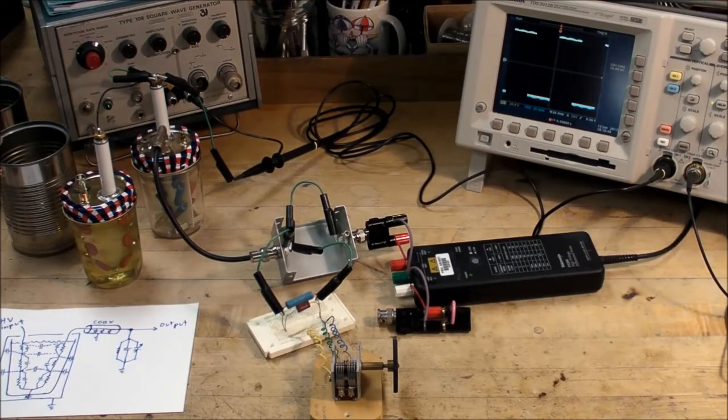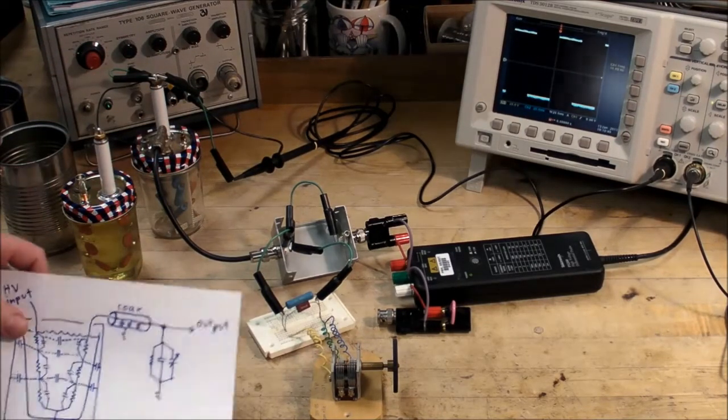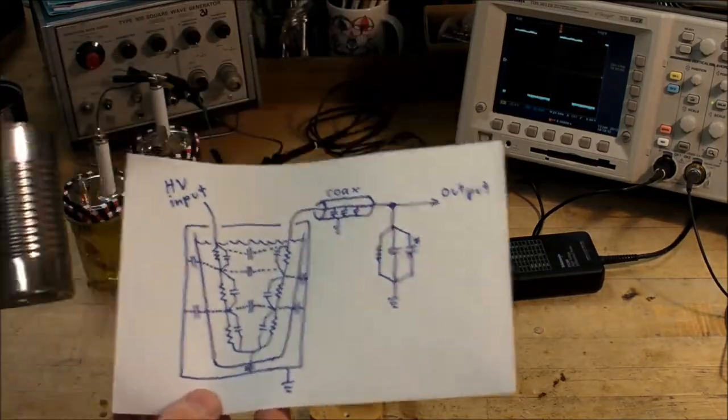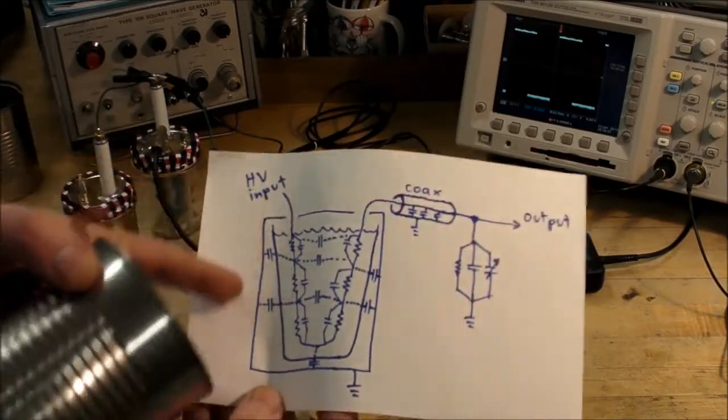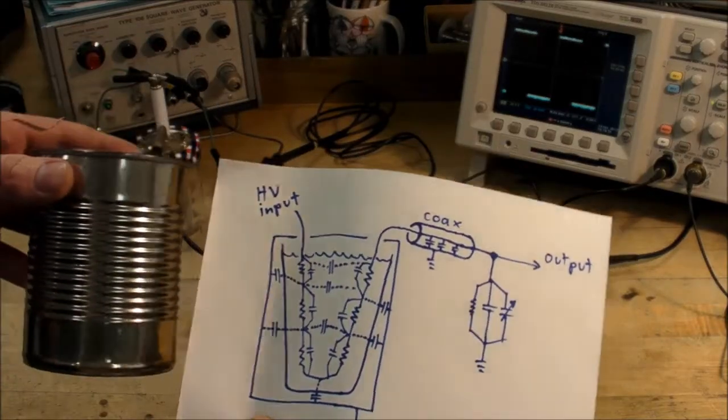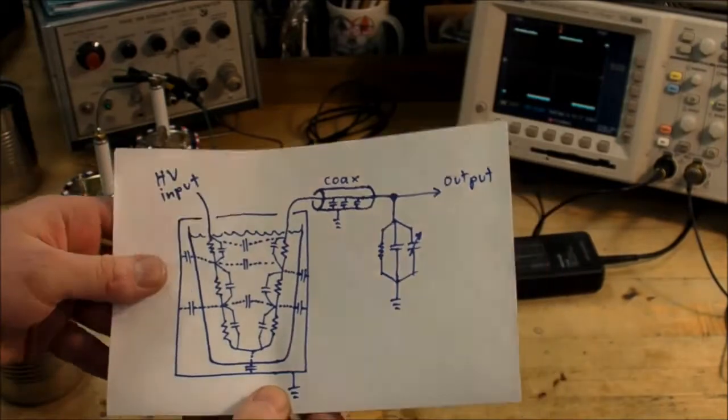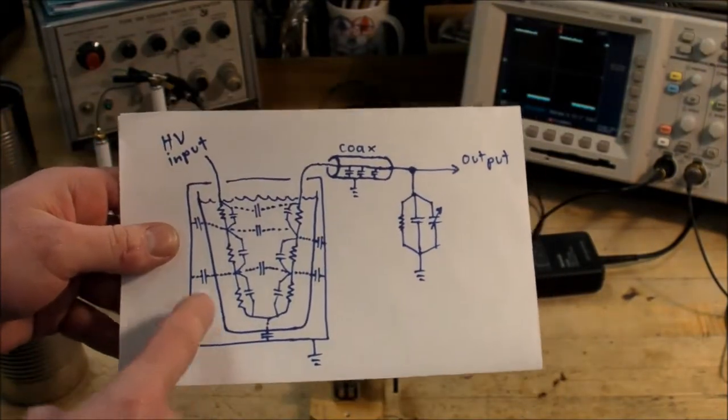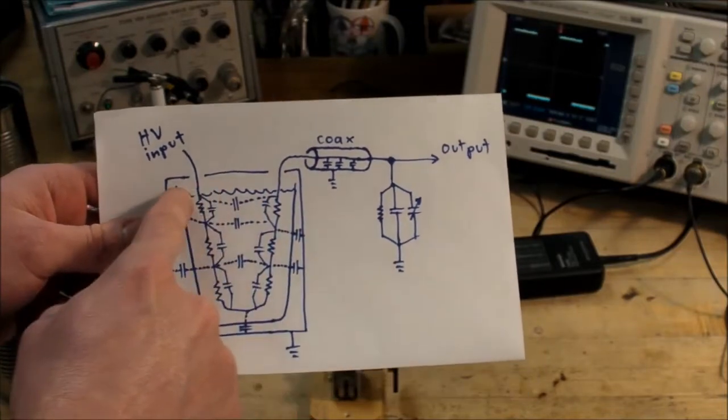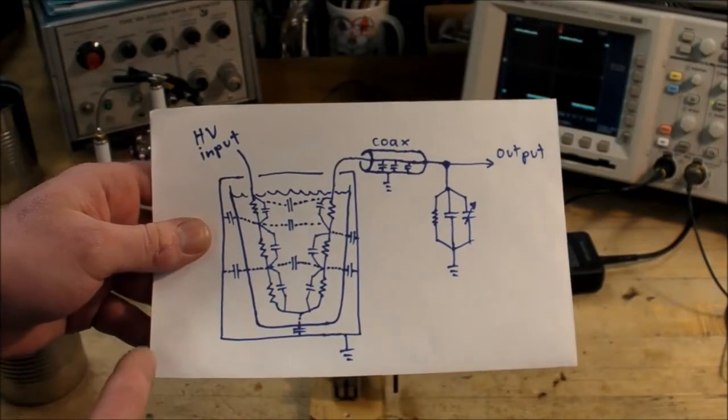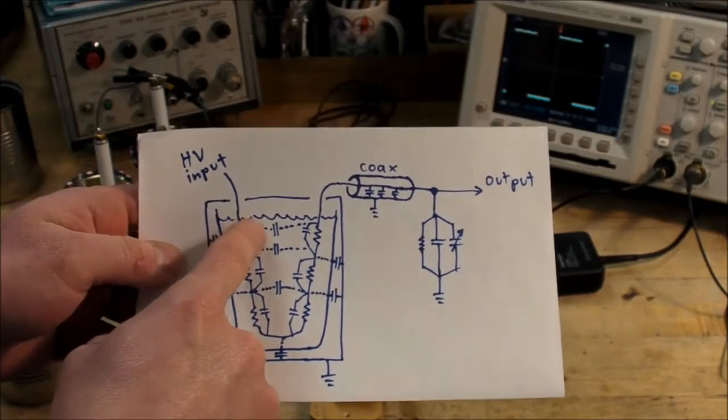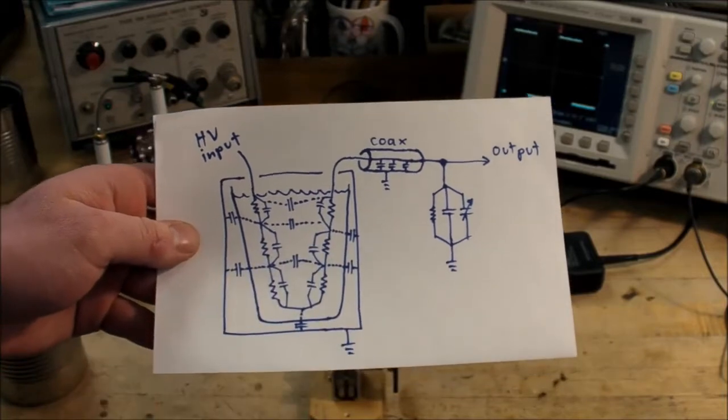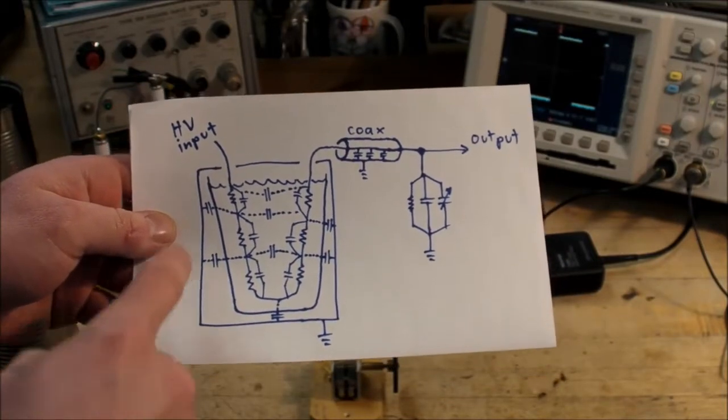This high voltage oscilloscope probe is just a glorified voltage divider. Here is basically the schematic. I've got a can right here, that's the outer box, the jar is going to go inside the metal can so it's shielded grounded on the outside. Then I've got the glass jar here filled with oil and that oil introduces some extra capacitance between nodes inside the jar.